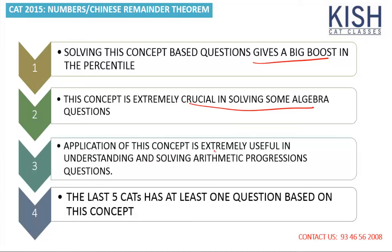Chinese Remainder Theorem is extremely useful in understanding and solving arithmetic progression questions. In the last five years of CAT, at least one question was based on this concept.